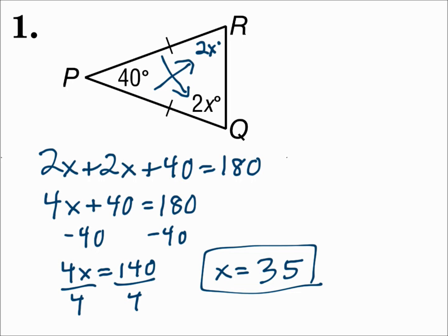Remember, the sides that are congruent — if you go to the angles opposite those sides, those angles are also congruent. And remember that the three angles of a triangle add up to 180.